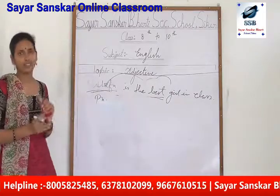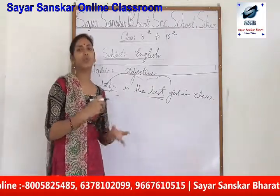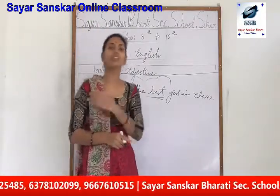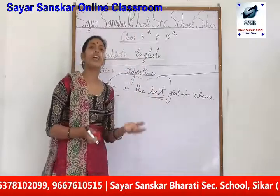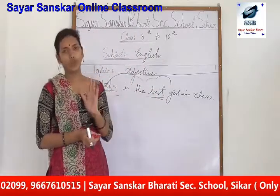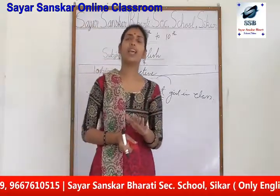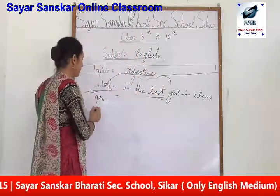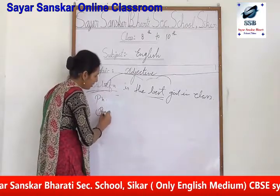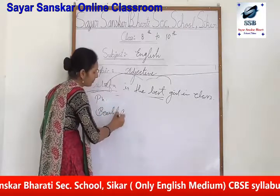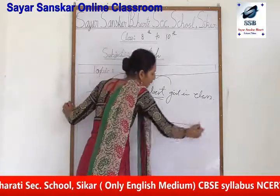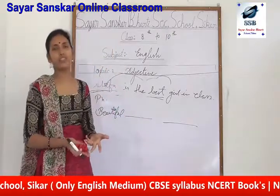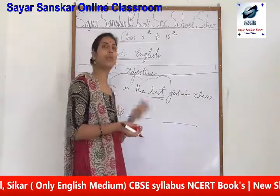Now, if I talk about your today's task — you might have understood what I am going to assign. I am giving you to prepare comparative, positive, and superlative degrees of some particular adjectives of your choice. For example, I am writing 'beautiful' — what would you add? Comparative and superlative: beautiful, more beautiful, and most beautiful. There are three to four ways to convert adjectives from positive to comparative and superlative.